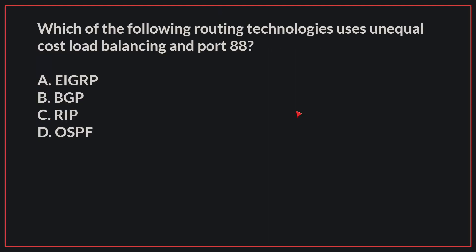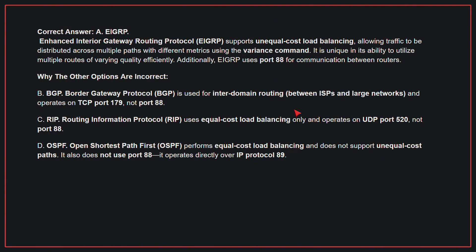Which of the following routing technologies uses unequal cost load balancing and port 88? The correct answer is A, EIGRP. Enhanced Interior Gateway Routing Protocol supports unequal cost load balancing, allowing traffic to be distributed across multiple paths with different metrics using the Variance command. It is unique in its ability to utilize multiple routes of varying quality efficiently. Additionally, EIGRP uses port 88 for communication between routers.